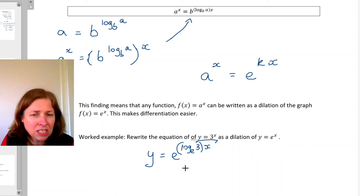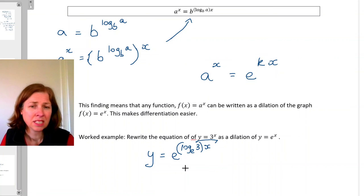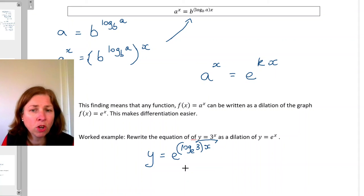So what this means now is if I needed to find dy dx, I can simply say, well, log base e of three, that's just a number. So I can say dy dx equals log base e of three times e to the power of log base e of three x. So you can see why that's useful. Okay, that is our little video on the change of base rule.